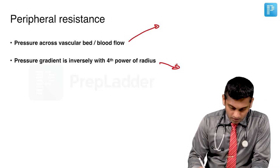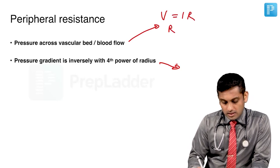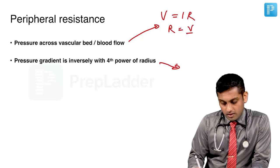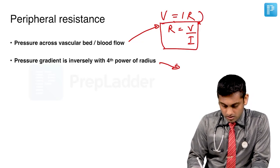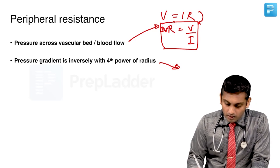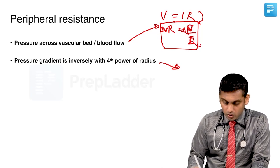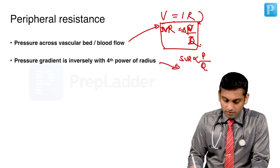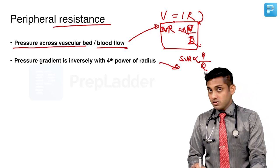These are pretty straightforward things where in physics we learn that voltage is nothing but the flow of current into the resistance. So resistance is nothing but the gradient divided by the flow. I am trying to gently convert physics into cardiovascular hemodynamic concepts. The resistance is nothing but the peripheral vascular resistance, or in this case the systemic vascular resistance. The gradient is the pressure gradient written as delta P, and blood flow is written as Q. So the systemic vascular resistance is proportional to the pressure gradient and inversely proportional to the flow. Peripheral resistance is the pressure across the vascular bed divided by the blood flow across the same bed.